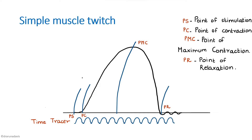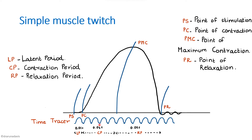The time tracer consists of small waves with a wavelength of 0.01 seconds each. We draw the time tracer to know the duration of each phase. The latent period — from point of stimulation to point of contraction — is 0.01 seconds (one wave). The contraction phase — from point of contraction to point of maximum contraction — has four waves, so it is 0.04 seconds. The relaxation phase has five waves, so it is 0.05 seconds.